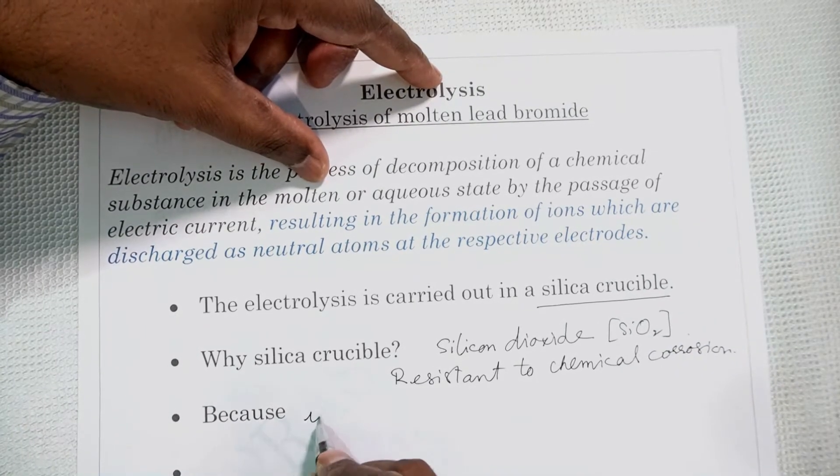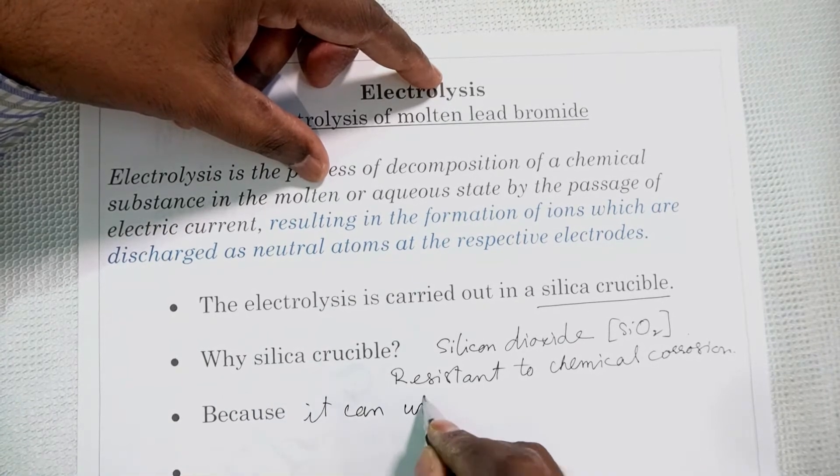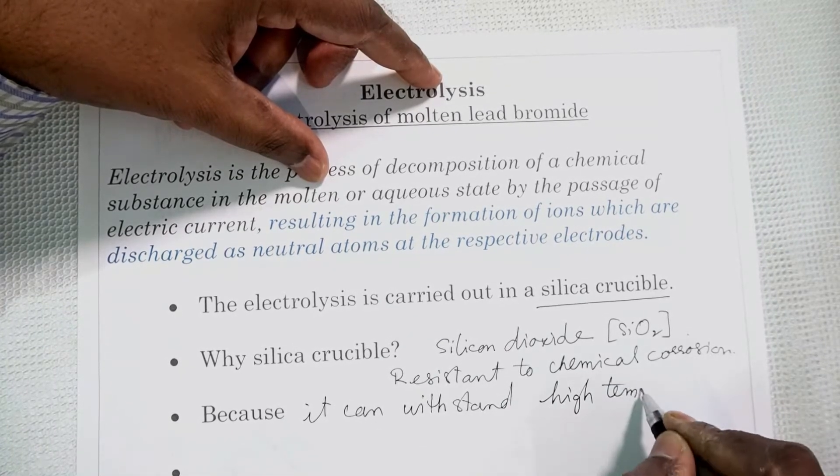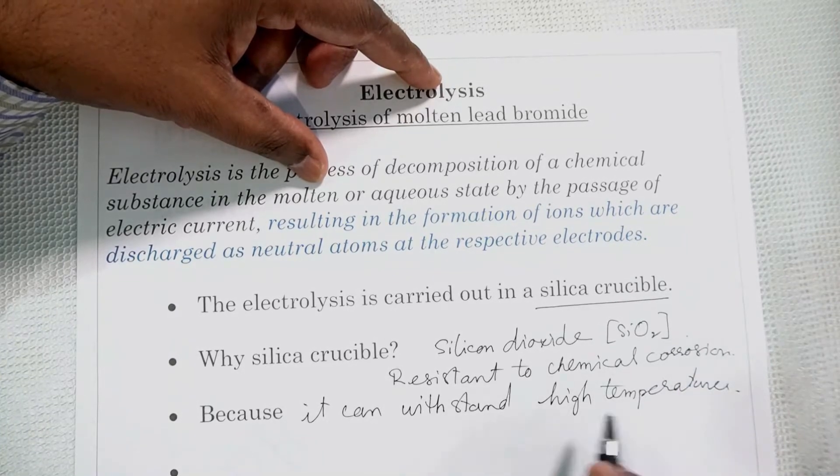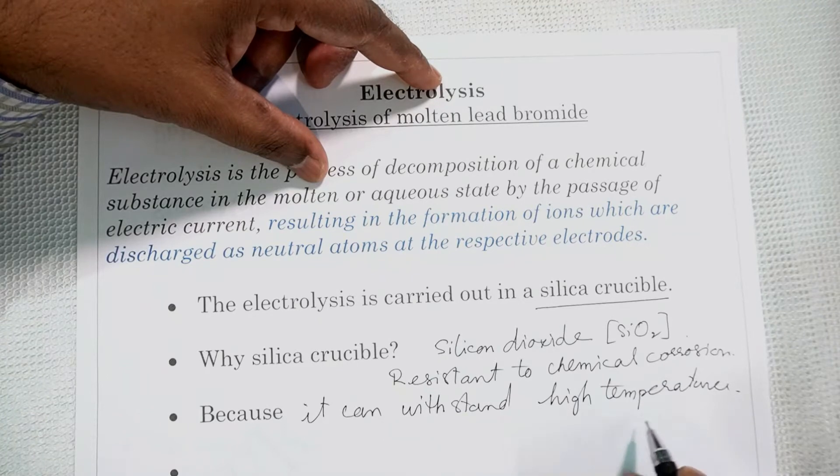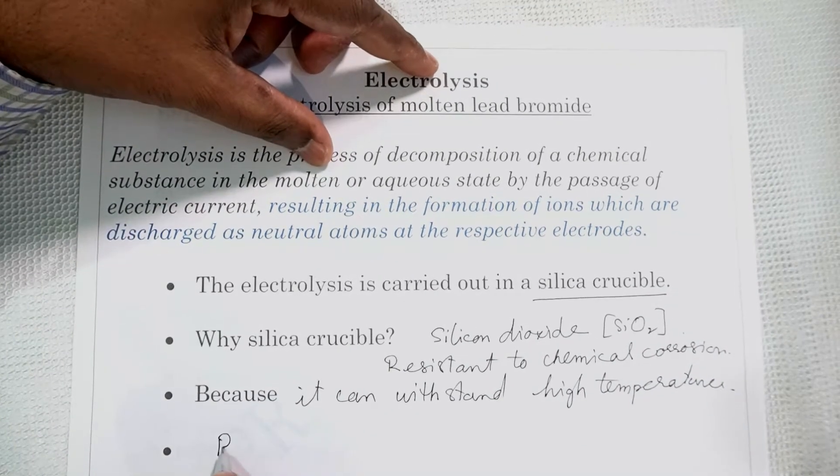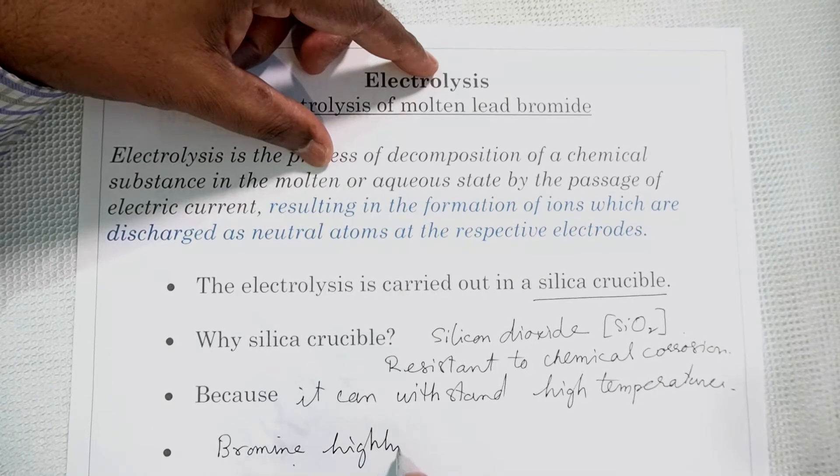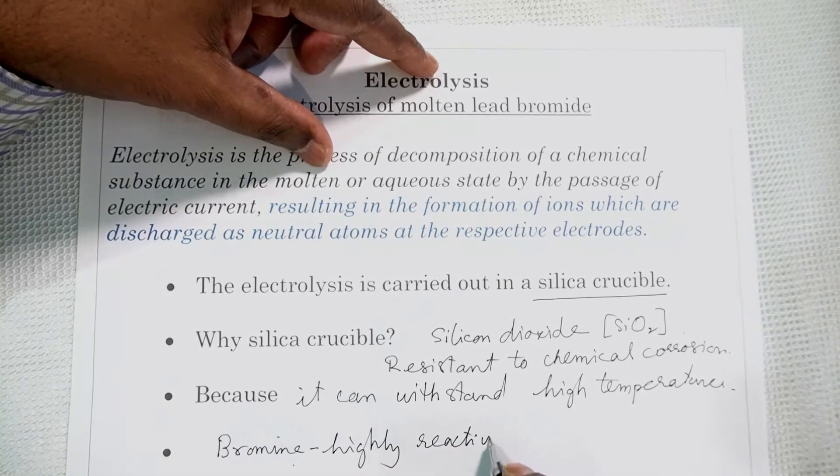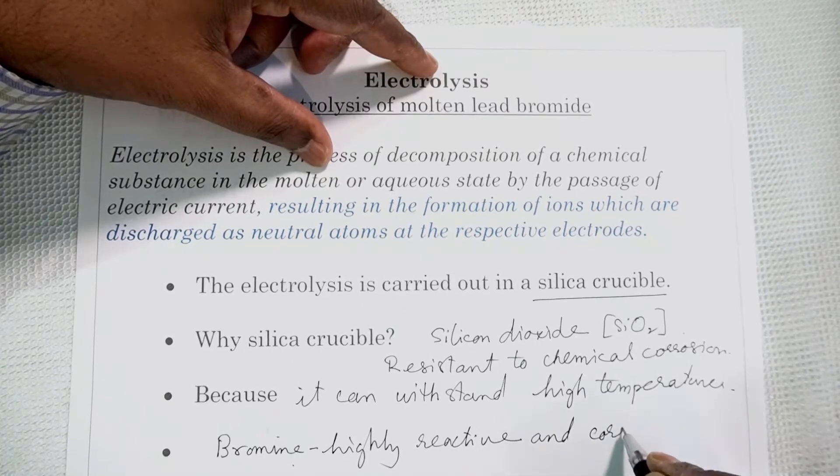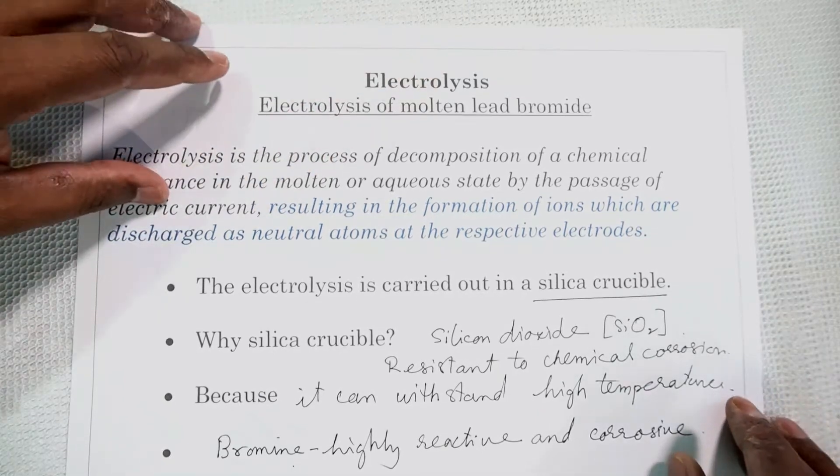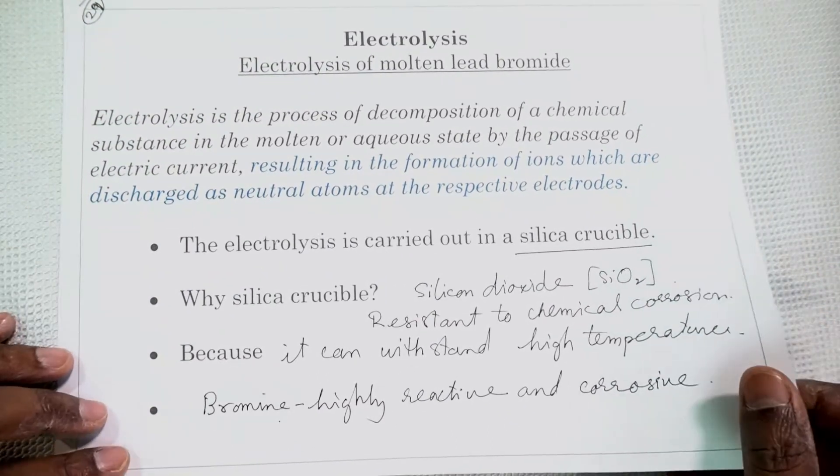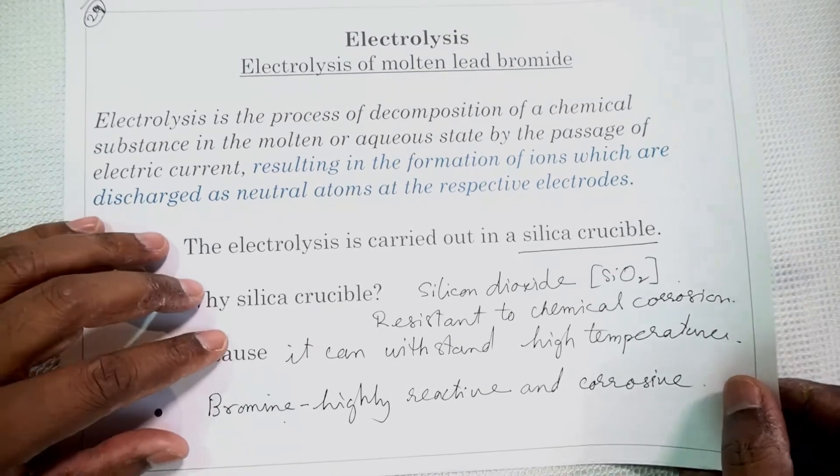Secondly, because it can withstand high temperatures. Two reasons: resistant to chemical corrosion and it can withstand high temperatures. Now bromine is a product of this electrolysis. Bromine is a halogen, highly reactive and also corrosive. Corrosive means it will react and damage things. That is why we need a silica crucible and any other container cannot be taken like that. So I think you understood why we are using a silica crucible to carry out the reaction.